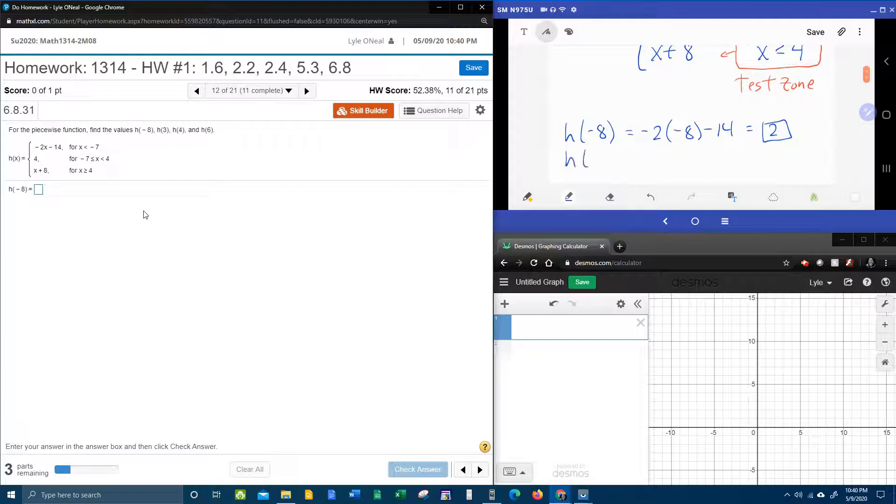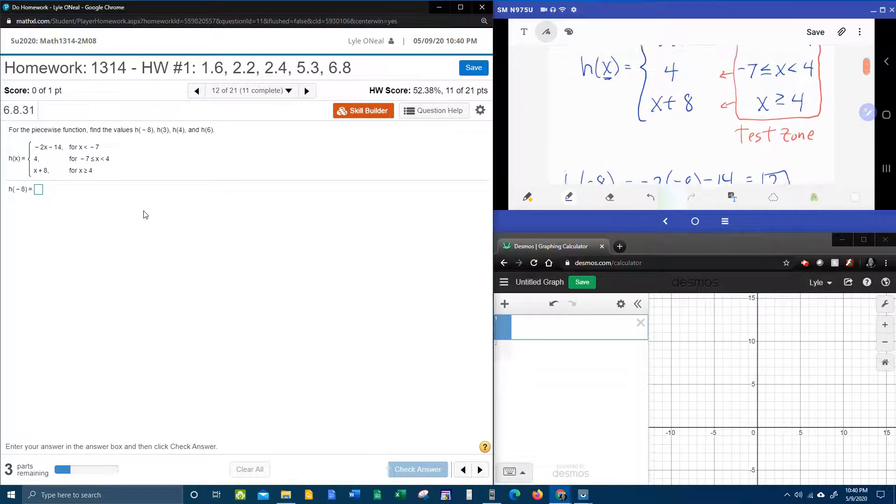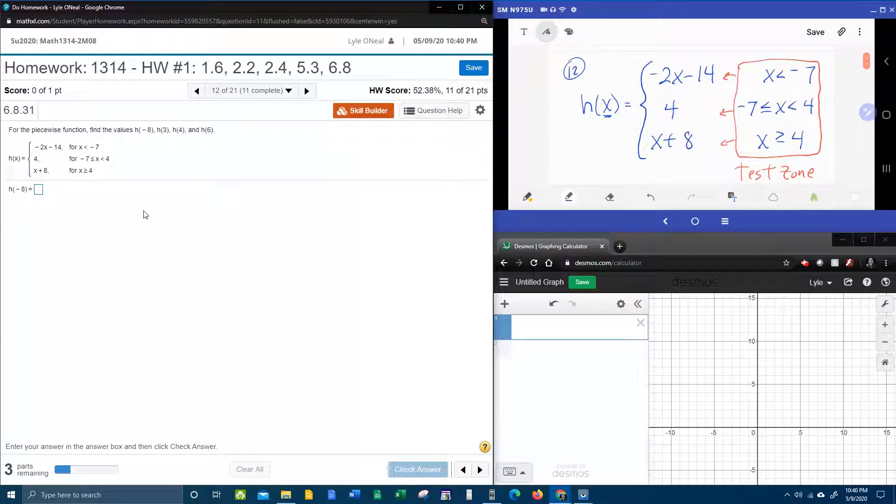Next, we're going to do h of three. And again, we're going to take the three to the test zone and we're going to test it to see where to put it. Is three less than negative seven? No. Is three between negative seven and four? Yes it is.